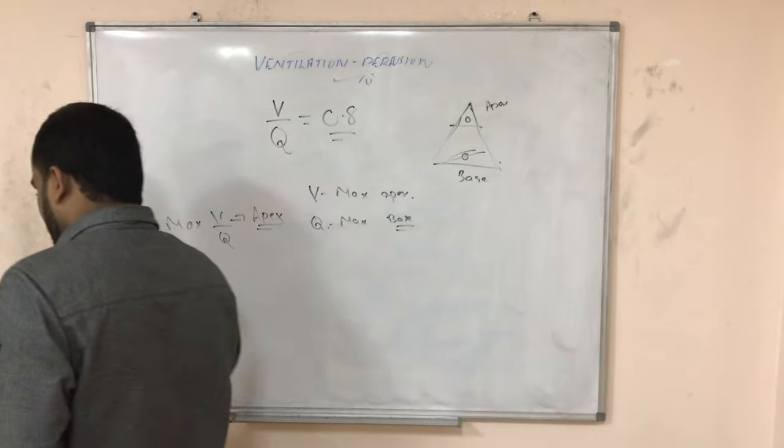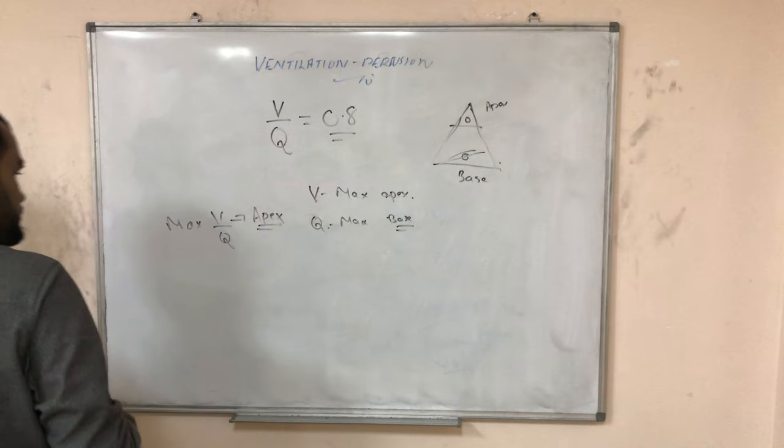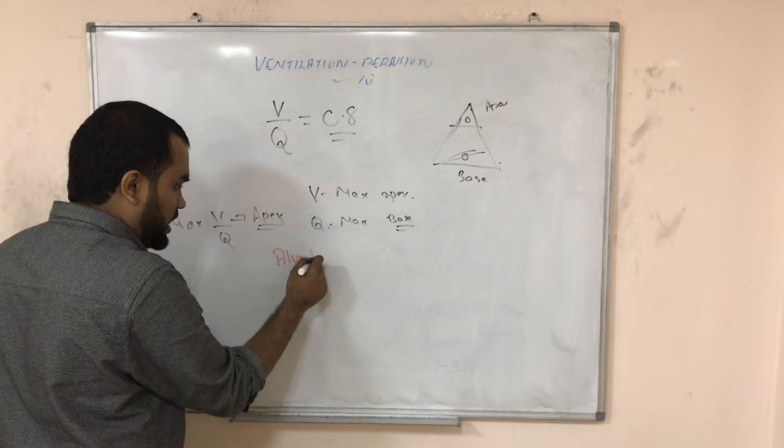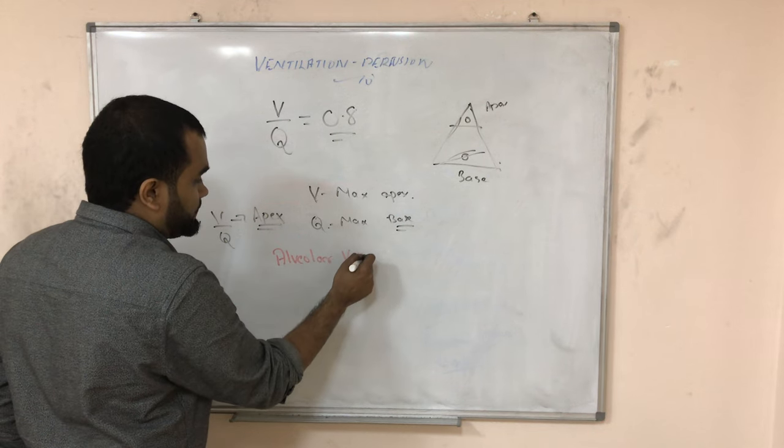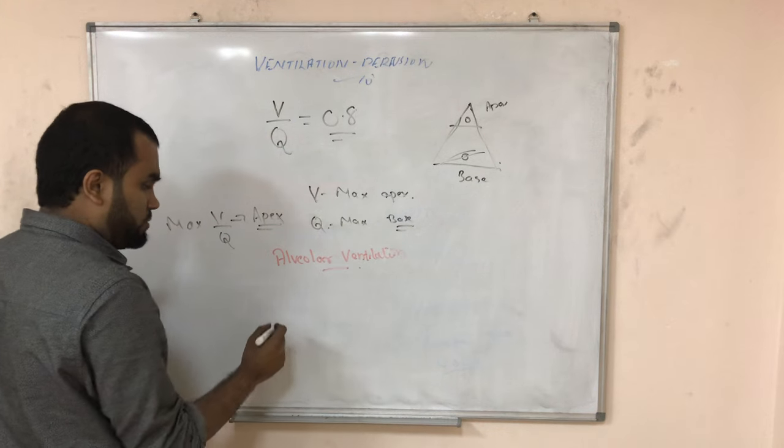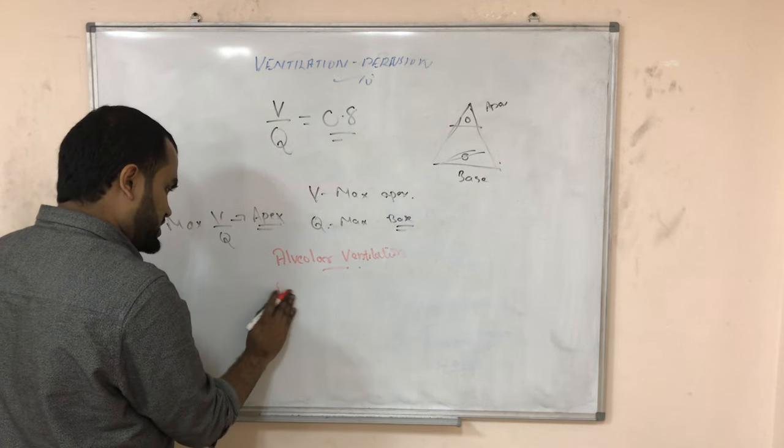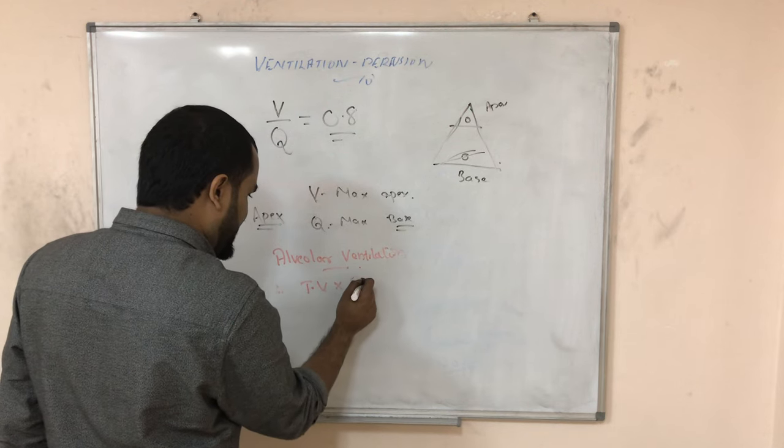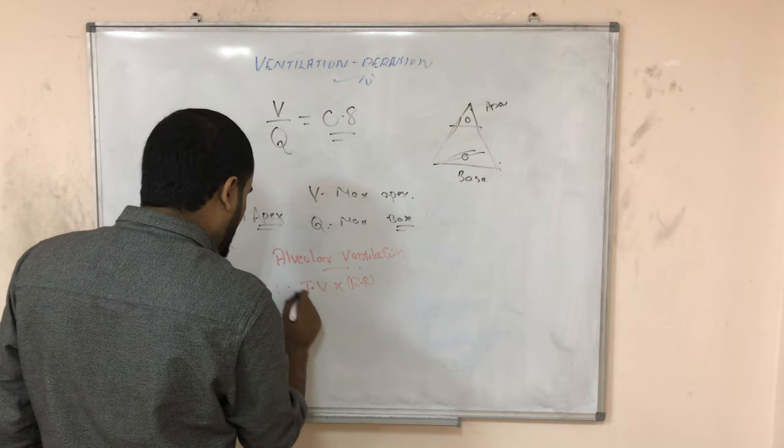Now let me ask you how you find the alveolar ventilation. Alveolar ventilation rate - how you find? You can multiply TV into respiratory rate. You know TV we already studied.